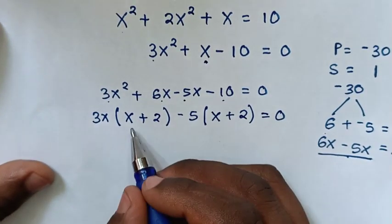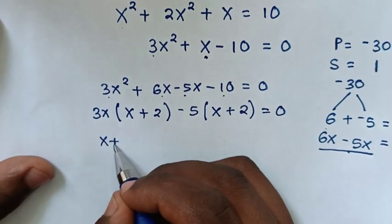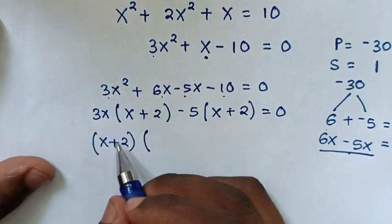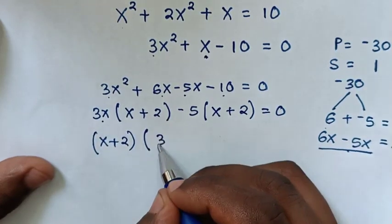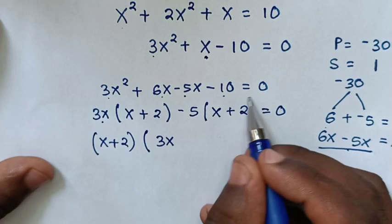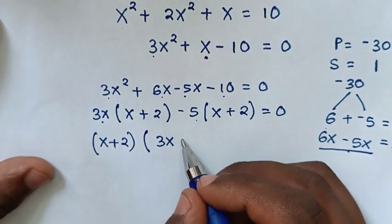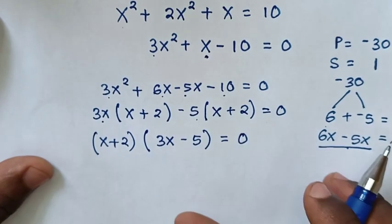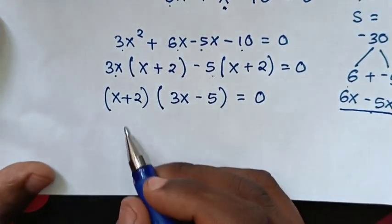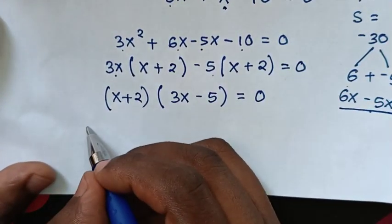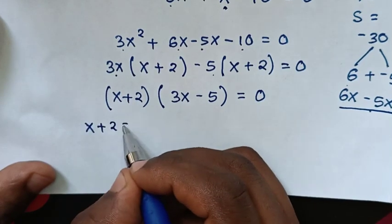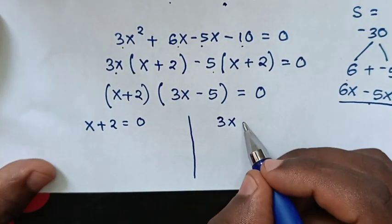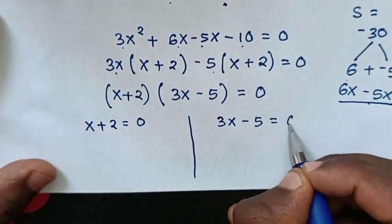Now in this equation we have two solutions. Whereas the first solution x plus 2 is equal to 0, and another solution is 3x minus 5 is equal to 0.